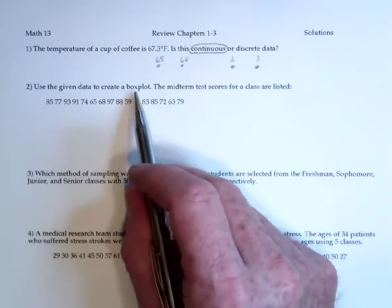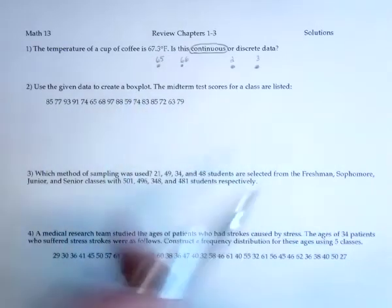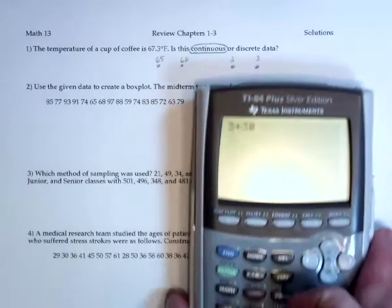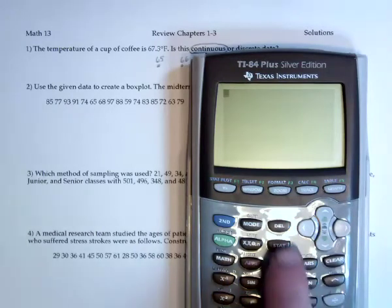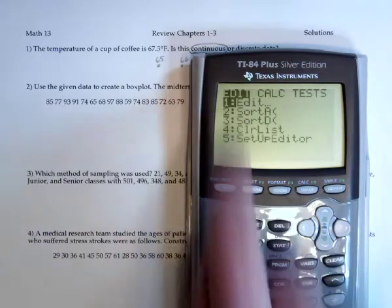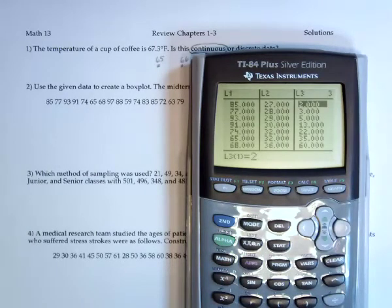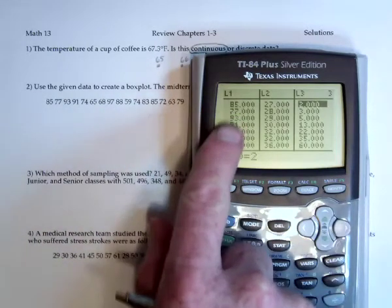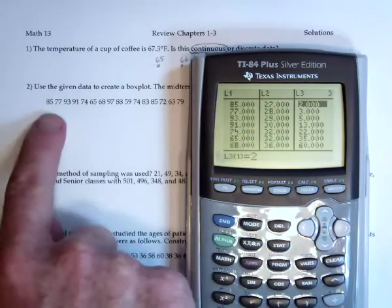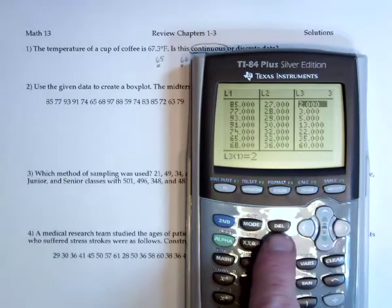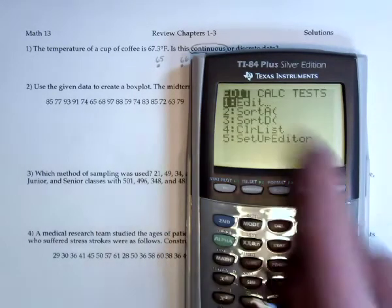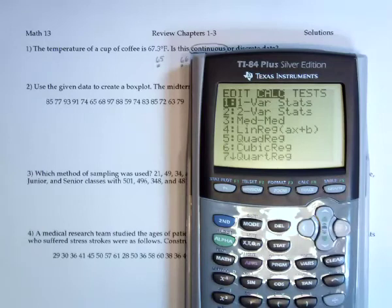On to the next one, which is creating a box plot. So I would suggest using the graphing calculator, TI-84, for this. If we go to Stat, and then the first one, Edit, is to enter the information. And for this review, I've already entered all of the data so that you don't have to watch me type it in. So here's the information in list one: 85, 77, et cetera. There's two ways to do the box plot. So first of all, go to Stat, move over to Calculate, and the one variable statistics will find out a lot of stuff.